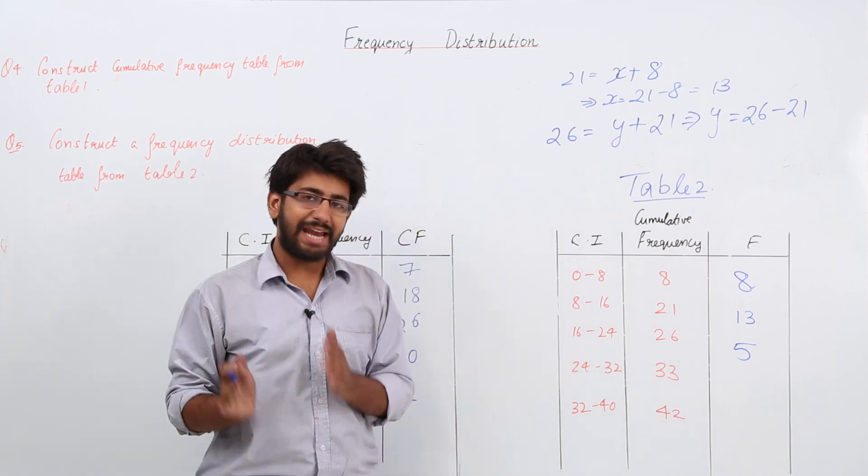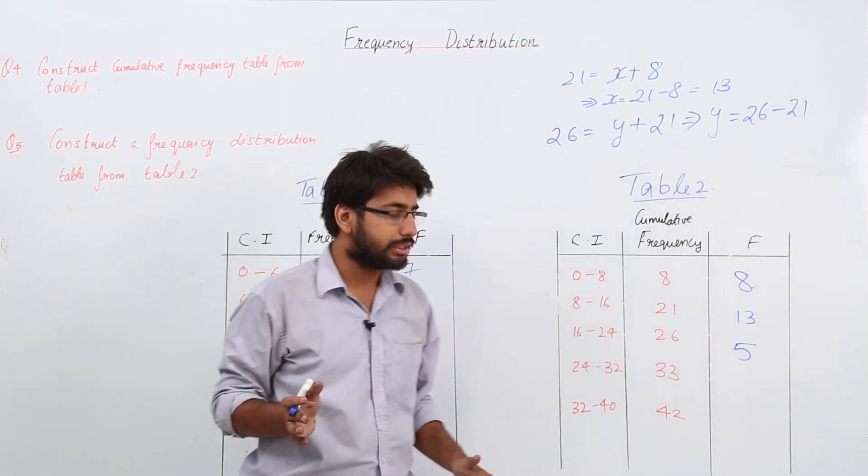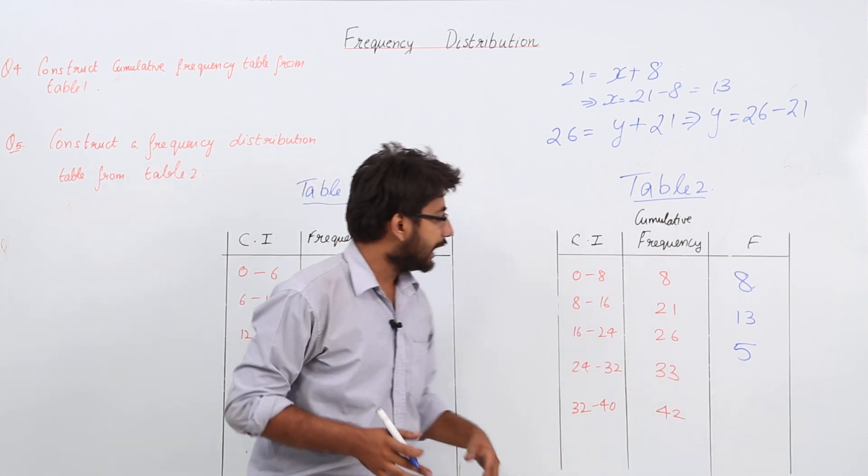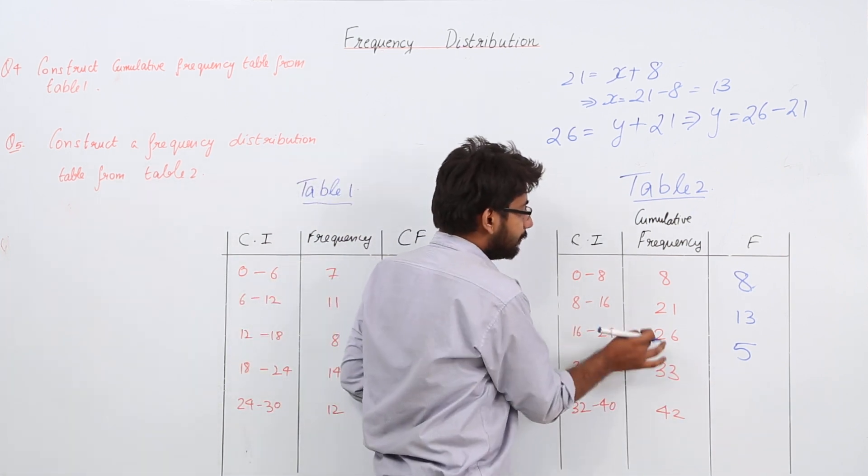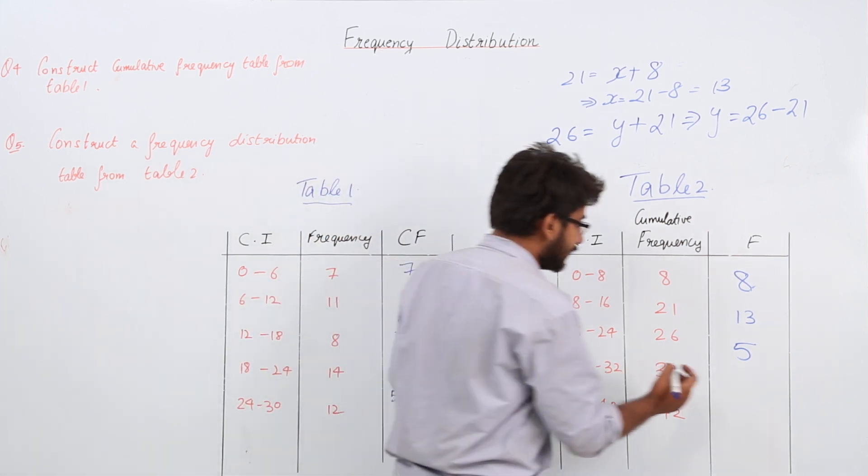That means you just have to subtract the consecutive cumulative frequencies. Similarly, in this case the answer would be 33 minus 26. What is 33 minus 26? It equals 9.